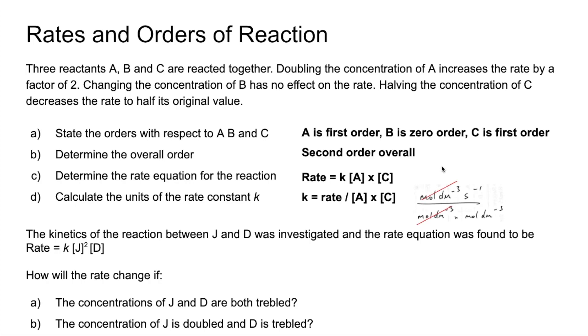And then we take the denominator up to the top, flip the signs of the powers, we get that. Conventionally, you're supposed to write positive powers first, so the dm³ mol⁻¹ comes first. Don't worry if you haven't, you won't be penalized for that.